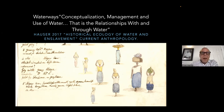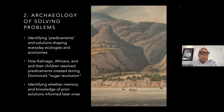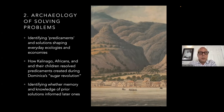That was the kind of context I entered into this project. I developed a team to answer questions about how enslaved laborers and indigenous people went about solving the kind of precarity introduced. The goals were pretty straightforward: identifying predicaments and solutions shaping the everyday ecologies and economies of people—the bread-and-butter data that archaeologists are fairly good at ascertaining. We also thought about how Kalinago, Africans, and their children resolved these predicaments created during the sugar revolution, which began approximately in the 1760s and continued well into the 1810s.